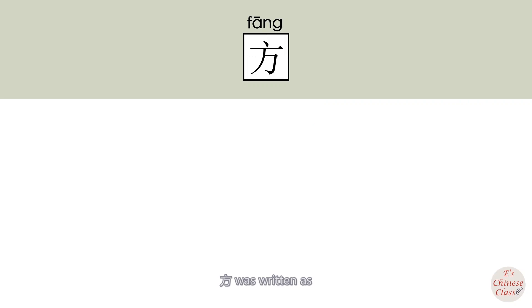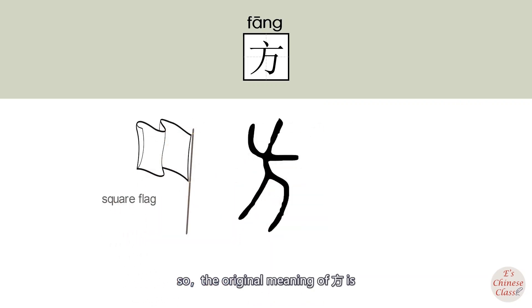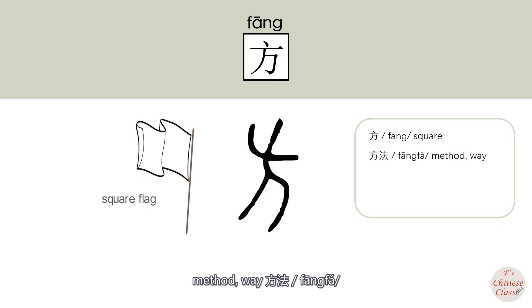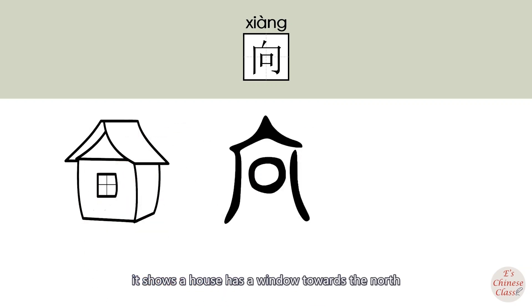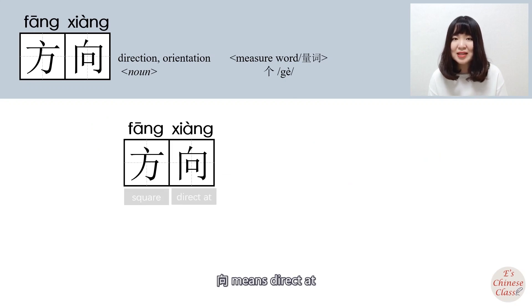In ancient times, 方 (fāng) was written as a square flag, so the original meaning of 方 is 'square.' The extended meanings are 'method' or 'way' (方法, fāngfǎ) and 'direction' (方向, fāngxiàng). In ancient times, 向 (xiàng) was written to show a house with a window towards the north, so 向 means 'towards' or 'facing.' Therefore, 方向 (fāngxiàng) means 'direction.'